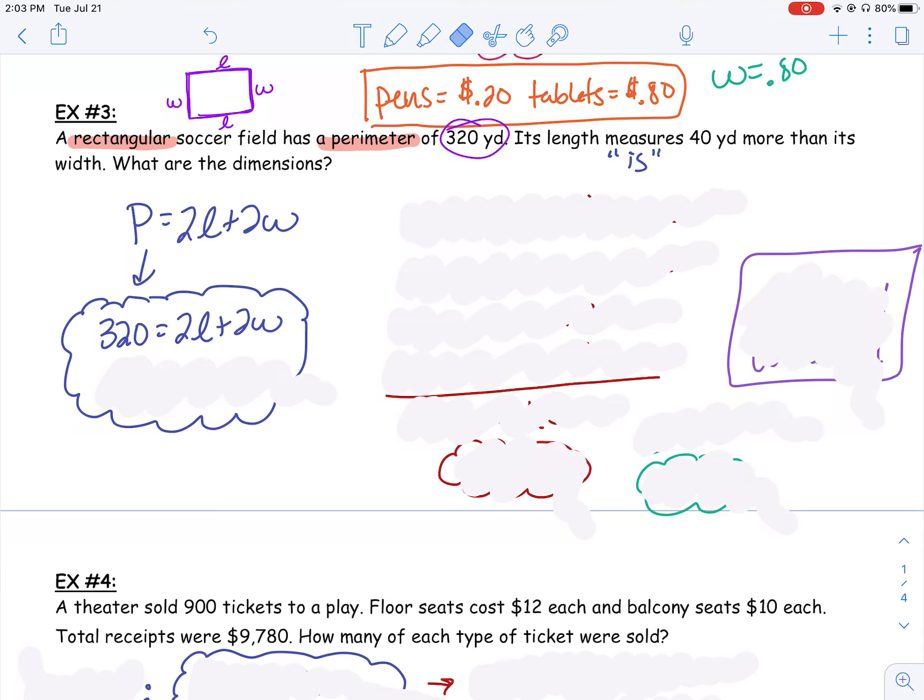So the length, l, is equal 40 more than the width. Well, then I'm going to do 40 plus w, or w plus 40. And so I have my second equation with a length and a width, and it incorporates all the information in my word problem. So there's my system of equations.